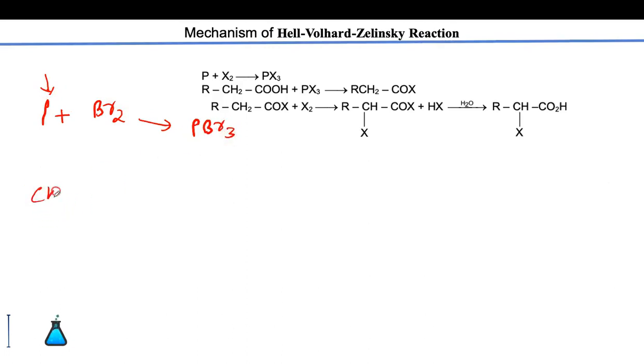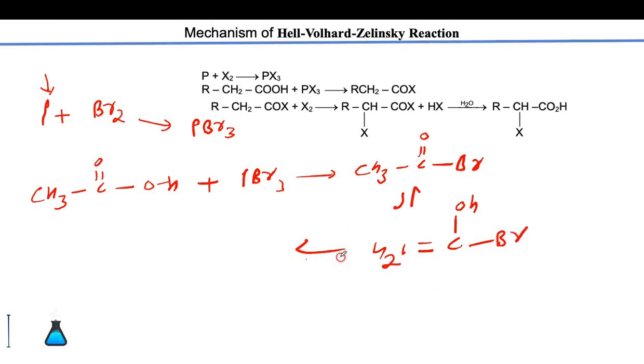Let us take an example of CH3C double bond OH, which is acetic acid. When acetic acid is treated with PBR3, it will give you CH3COPR3. Now we know that it consists of a small amount of enolic content also, so this will be the enol form of this molecule.